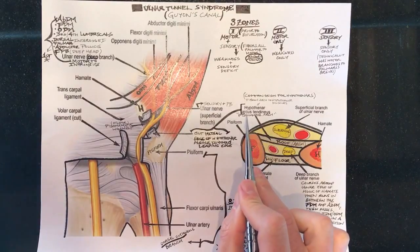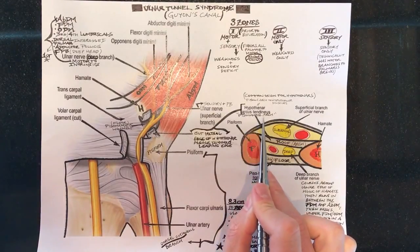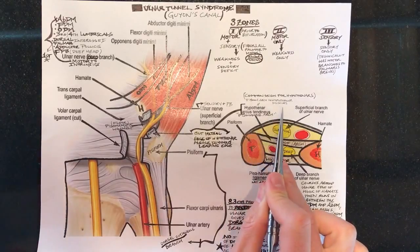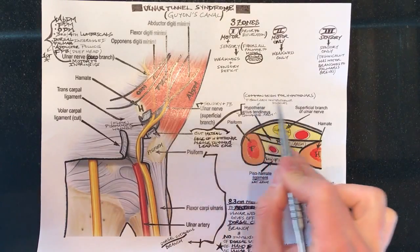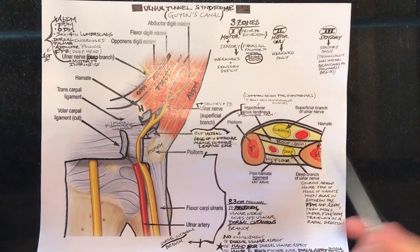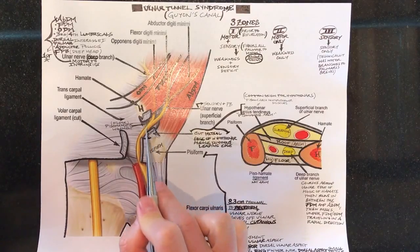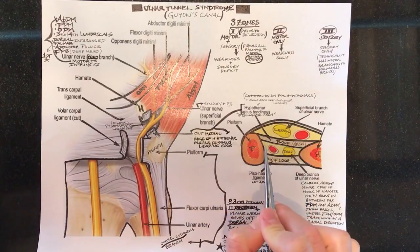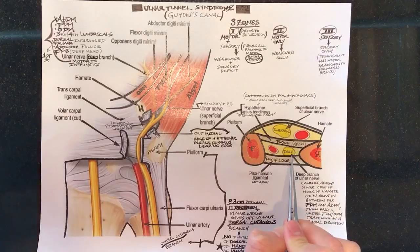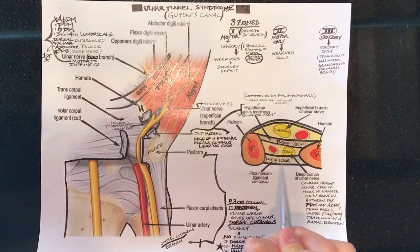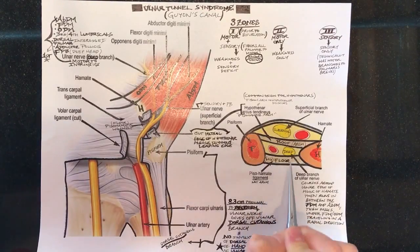There's different terms for these two sometimes called the hypothenar arch, tendinous or the fibrous arch of the hypothenar muscles or the common origin for the hypothenars. As you can see here this diagram it's cut and in this diagram it's intact. That forms the roof for the deep ulnar branch and the floor is the pisohamate ligament for the deep ulnar.